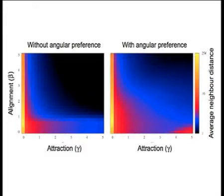Analyzing the average neighbor distance between fish, we expected these values to diverge when the attraction parameter tends to zero, and to decay when increased. However, the parameter space with the angular preference displayed a second ridge as the attraction parameter was increased.